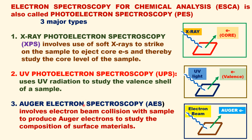Third, Auger electron spectroscopy (AES). It uses an electron beam to fall on the sample to eject Auger electrons. The emitted photoelectrons are called Auger electrons, and this technique is used to study the composition of the surface.